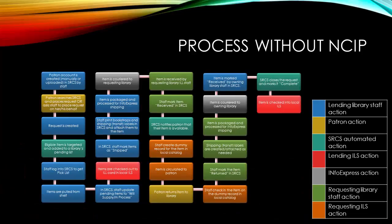Without NCIP, staff are responsible for all actions in both their local ILS and CERCS, many of which are repeated in some fashion. Patron accounts must be manually created, approved, and/or uploaded to CERCS by staff. Pick lists for CERCS are separate from those locally created, and requested items have to be managed in both the local and CERCS catalogs by both lending and borrowing libraries.